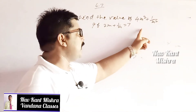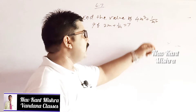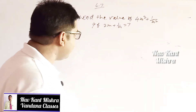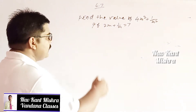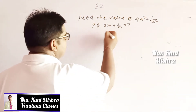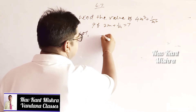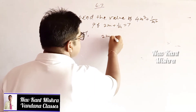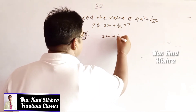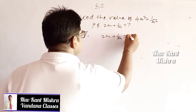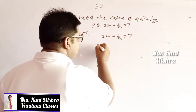My dear students, you need to find out the value of 4m square plus 1 upon m square. What is given in the question is that 2m plus 1 upon m is equal to 7.